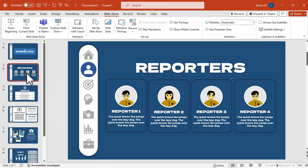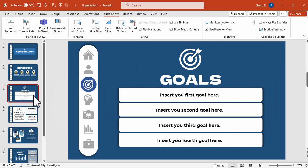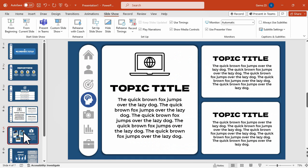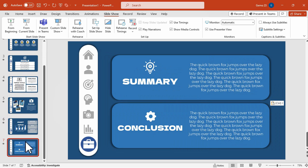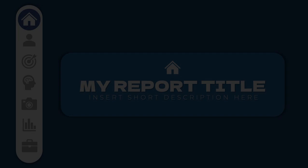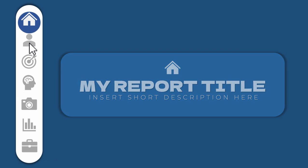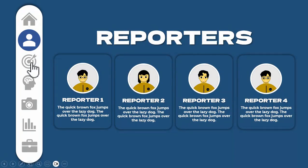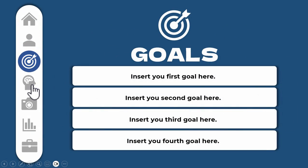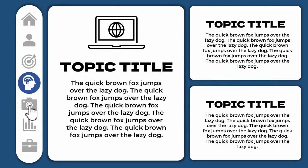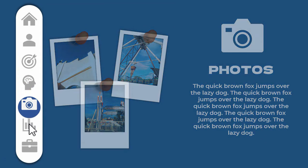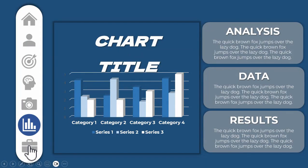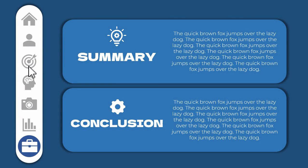Now it's time to add content to our presentation. I've included different information on each slide so you can design the presentation according to the content you need. Here's a preview after adding the content — the content simply fades as we navigate from slide to slide using the hyperlink function. However, we can further customize the Morph transition for the slide content.